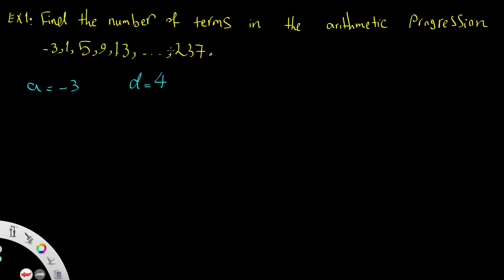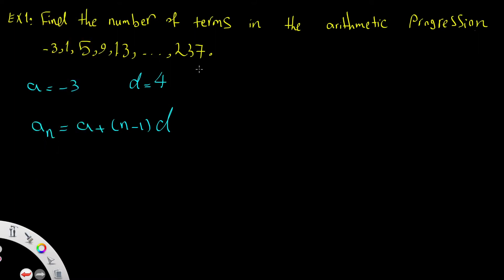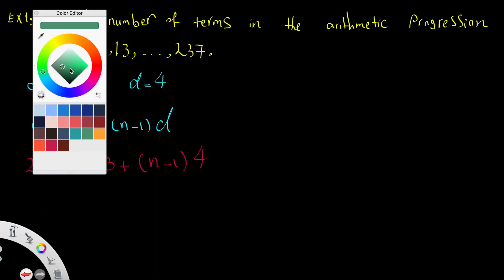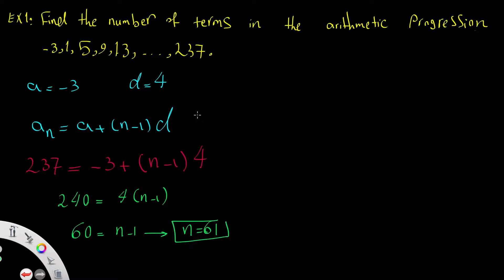We know the last term is 237, so using the formula a + (n-1)d: 237 = -3 + (n-1) × 4. Transferring -3 to the other side gives 240 = 4(n-1). Dividing both sides by 4: 60 = n - 1, so n = 61. There are 61 terms in this progression.